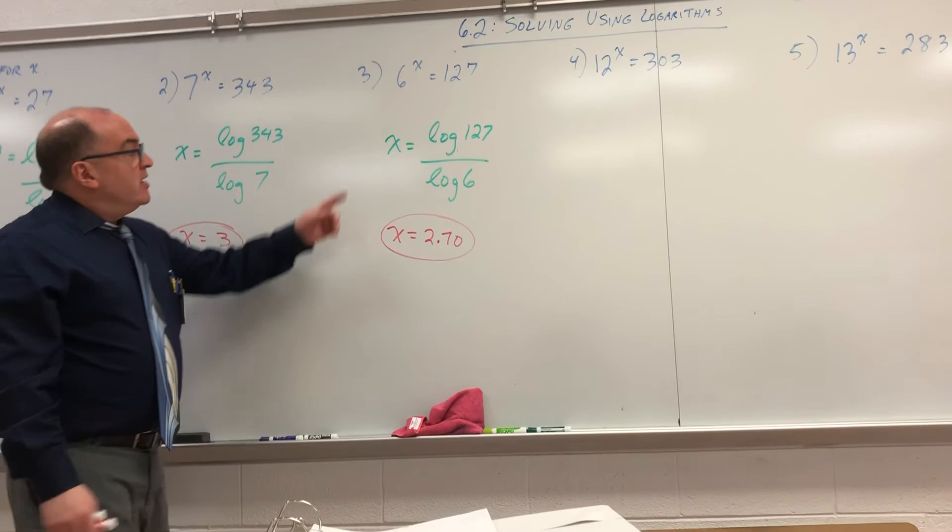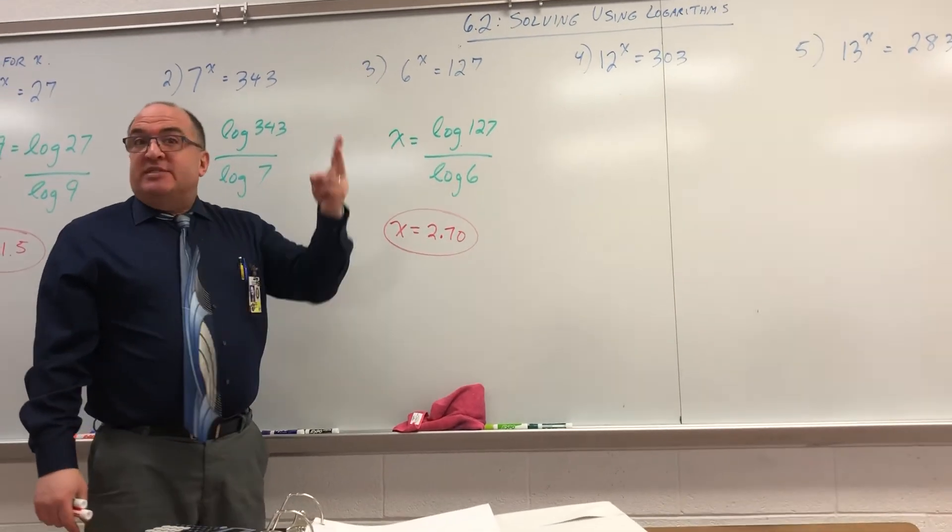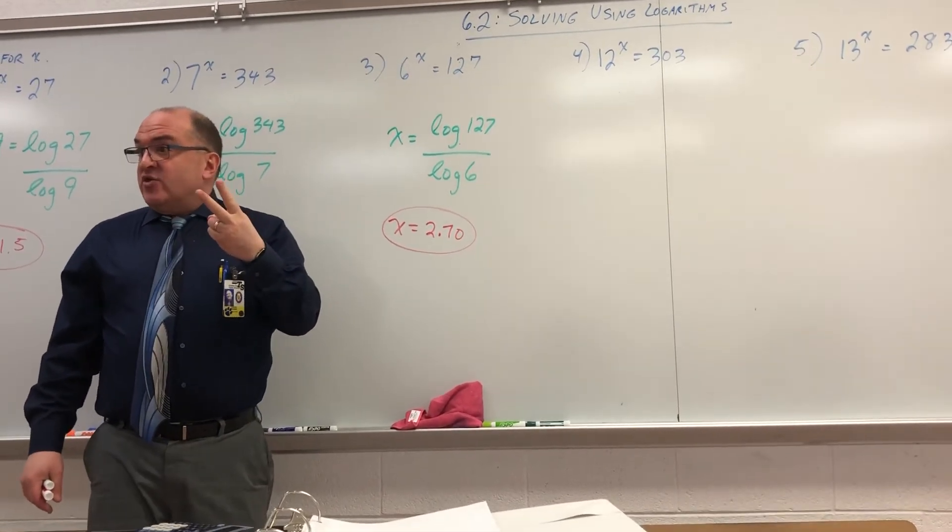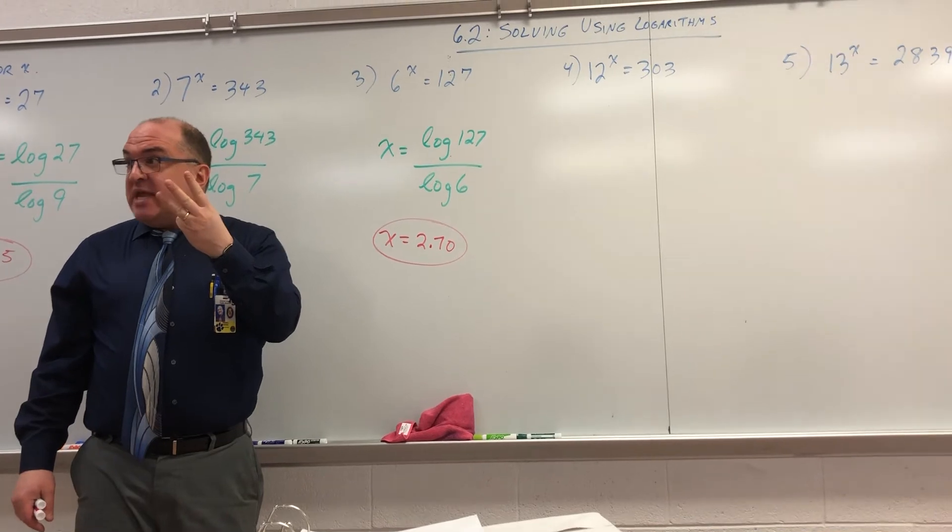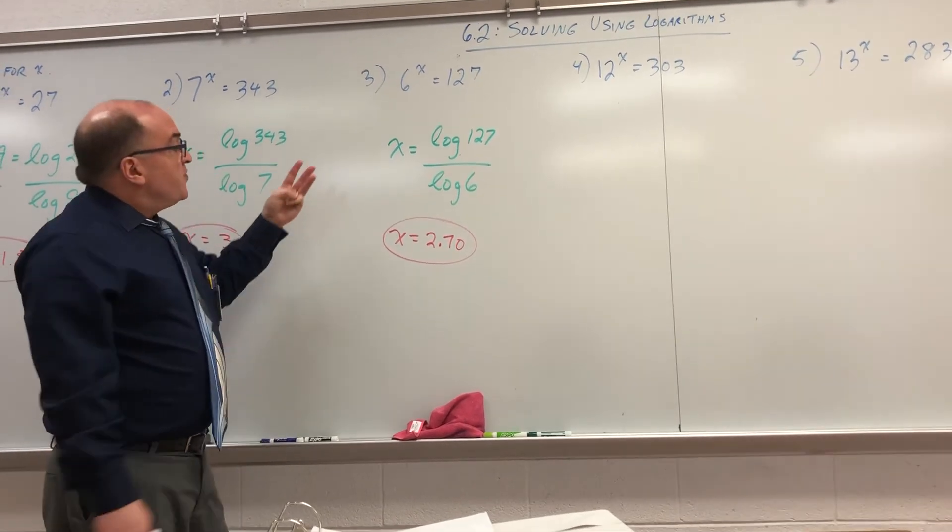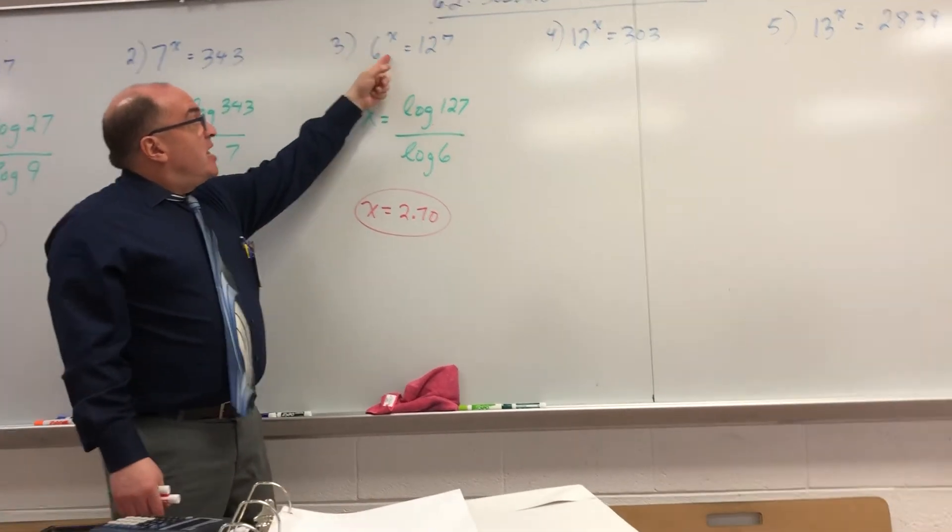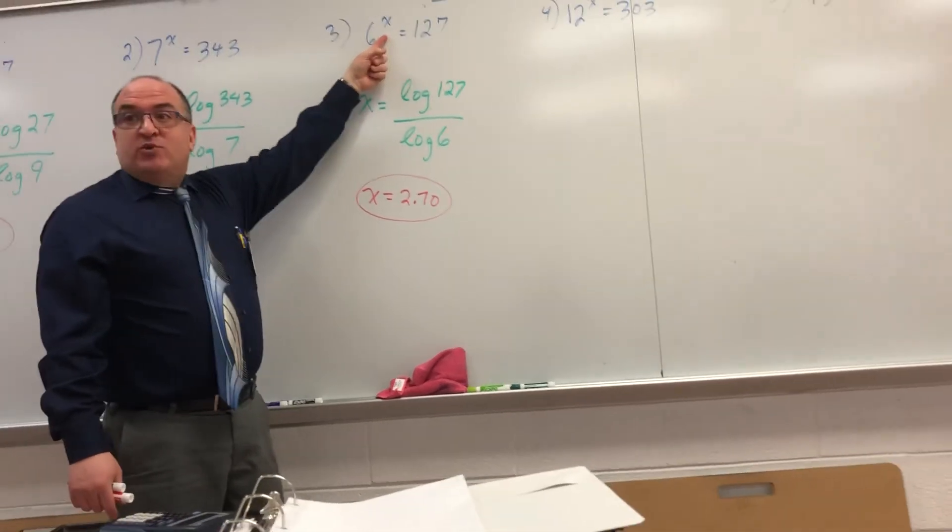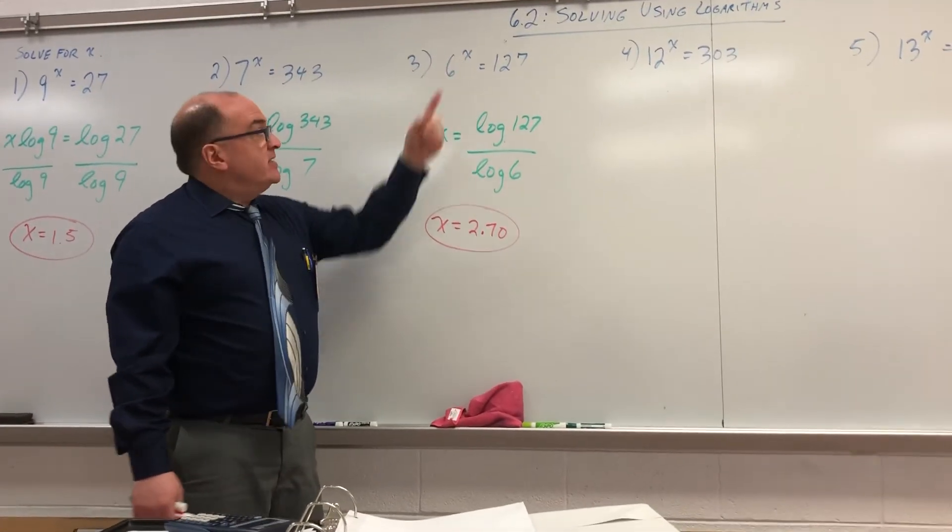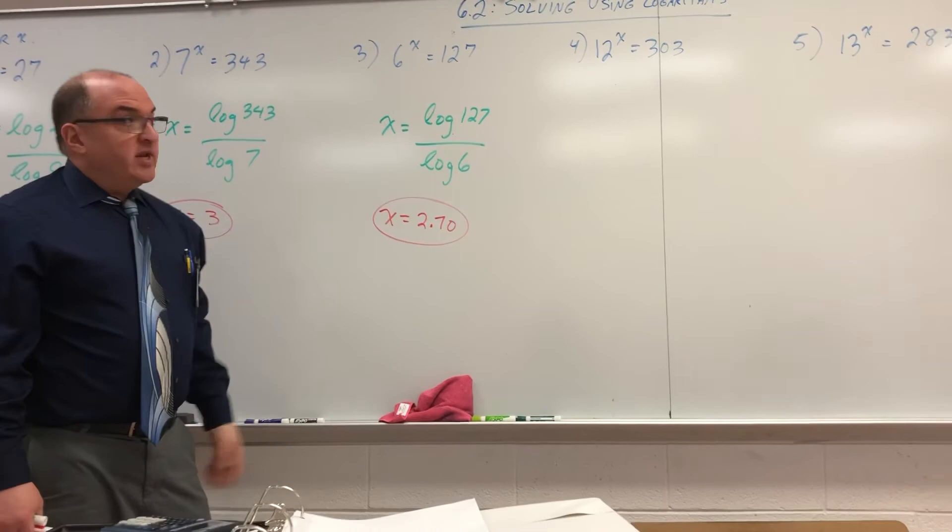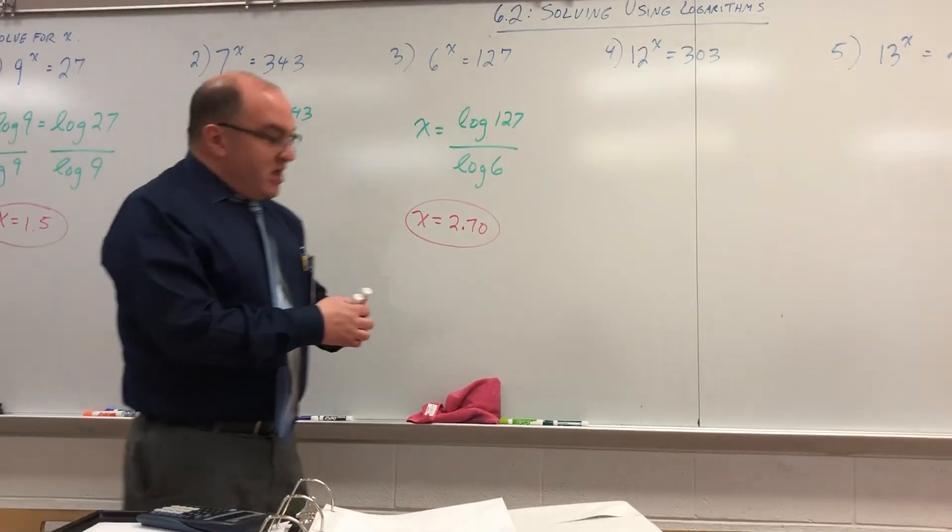By the way, once again, 6 times 6 is 36. 36 times 6 is 216, right? So, meaning that it's going to be in between 2 and 3, right? This X, which is exactly what it is.